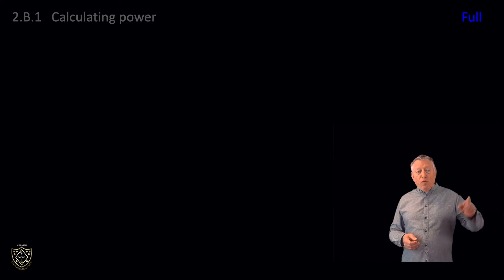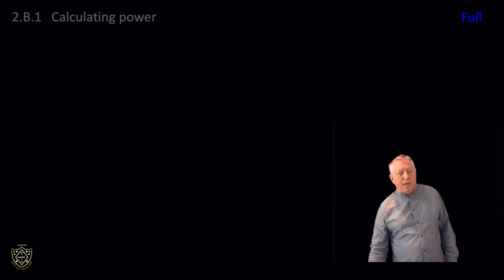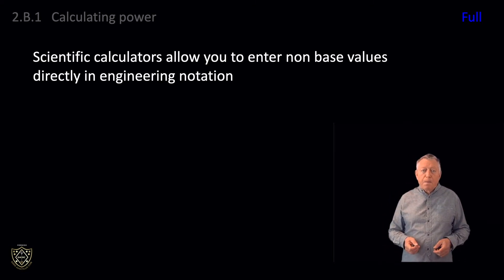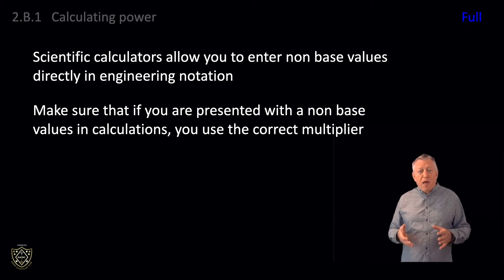Moving on to full license level, as there is no intermediate topic for this 2B1, scientific calculators allow you to enter non-base values directly in engineering notation, normally using the EXP or EE keys. Be clear about the difference between base values and non-base values and make sure that if you are presented with a non-base value in calculations you use the correct multiplier. You may like to review the three videos on this channel about using a scientific calculator. If you are reading straight through from intermediate level, you should tackle the intermediate topics in syllabus item 2C1 first to equip you to solve resistors in parallel.